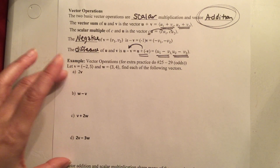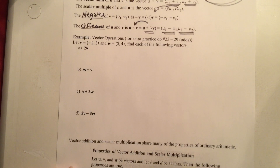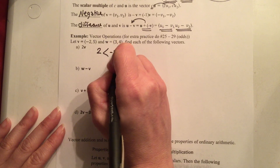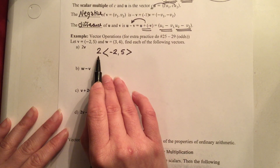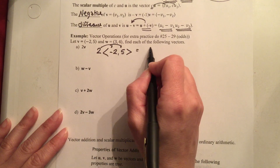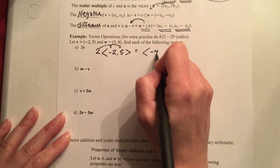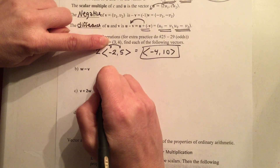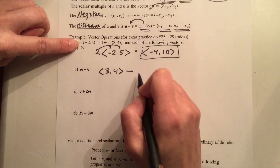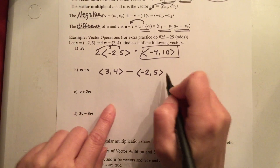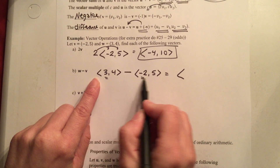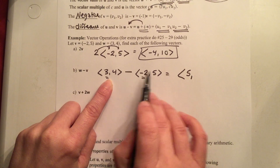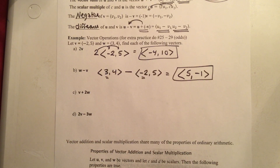Let's do a few examples. For 2 times vector V where V = ⟨−2, 5⟩: distribute the 2, giving you ⟨−4, 10⟩. For W minus V where W = ⟨3, 4⟩ and V = ⟨−2, 5⟩: subtract the x values — 3 minus (−2) = 3 plus 2 = 5. Subtract the y values — 4 minus 5 = −1. Solution is ⟨5, −1⟩.